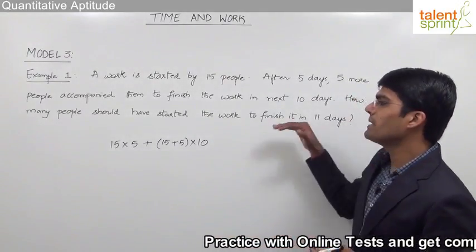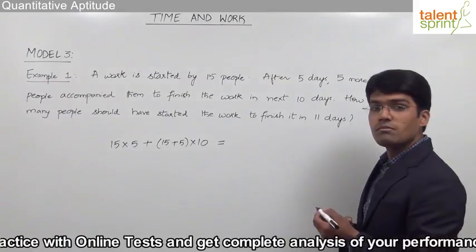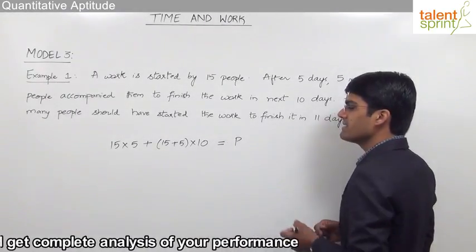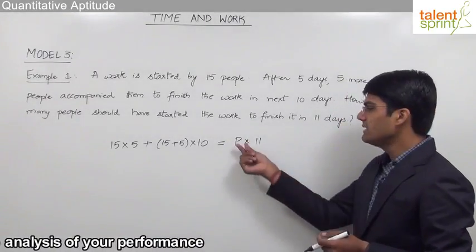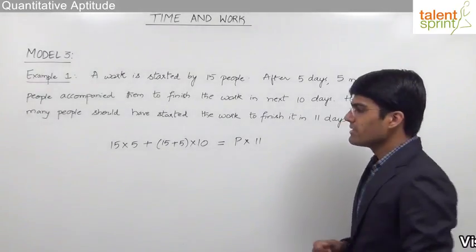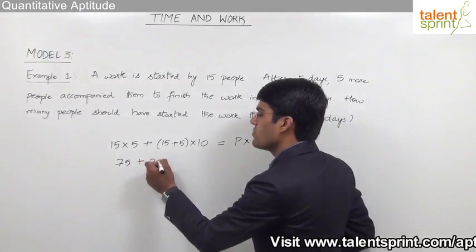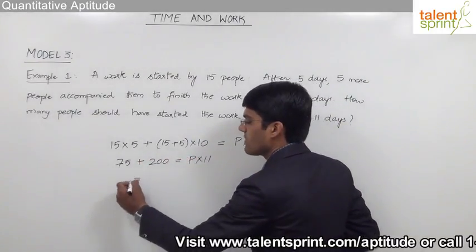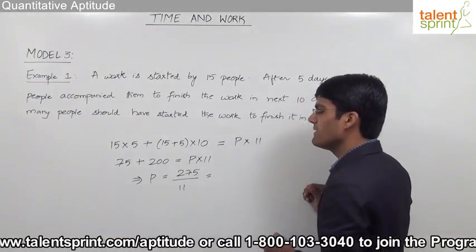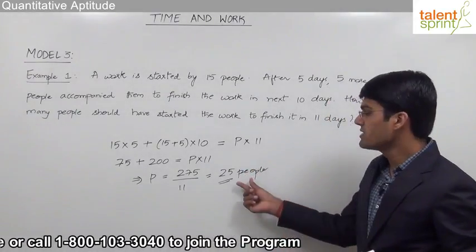Let P be the number of people required to finish the work in 11 days. So P × 11 must equal the total work. Simplifying: 15 × 5 = 75, plus 20 × 10 = 200, giving 275 = P × 11. Therefore P = 275 ÷ 11 = 25. So 25 people are required to finish the work in 11 days.